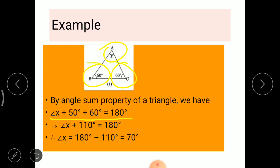So angle x plus 110 equals to 180 degrees. So we will transpose the 110 to the right hand side. The answer will be 70 degrees. So the x is equal to 70 degrees.